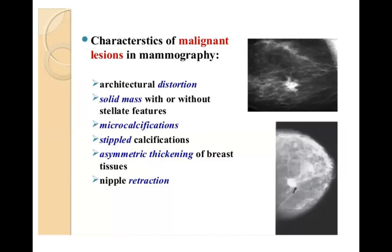There are certain characteristics on mammography by which you are almost sure of malignancy. These characteristics are architectural distortion, stellate nodules — stellate means star-shaped, meaning a nodule having multiple spikes — microcalcifications, asymmetric thickening of the breast tissue, and nipple retraction.